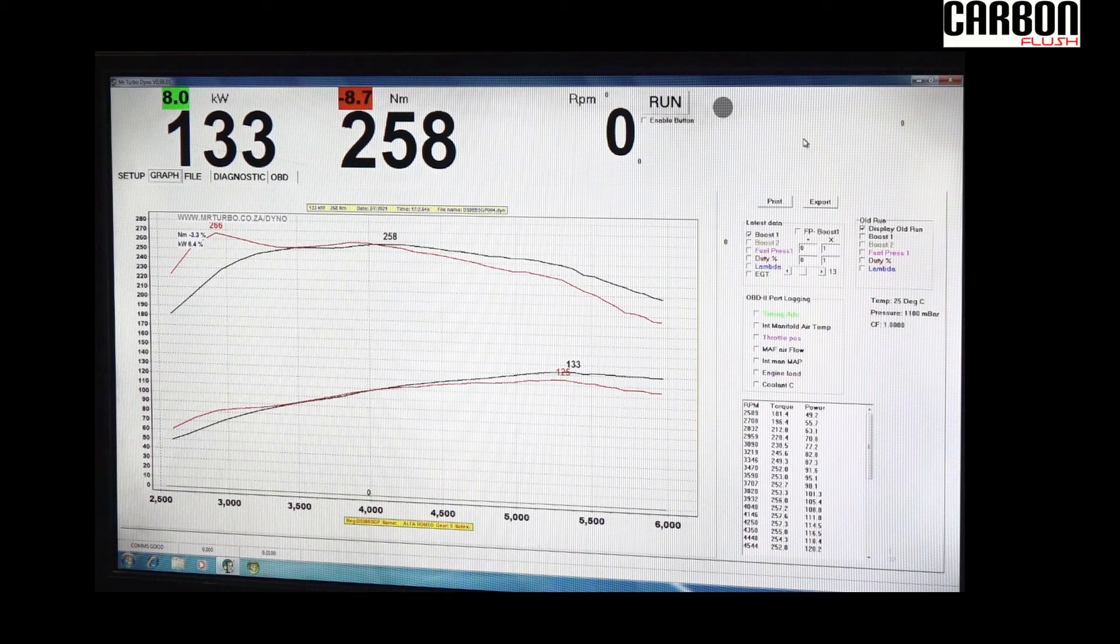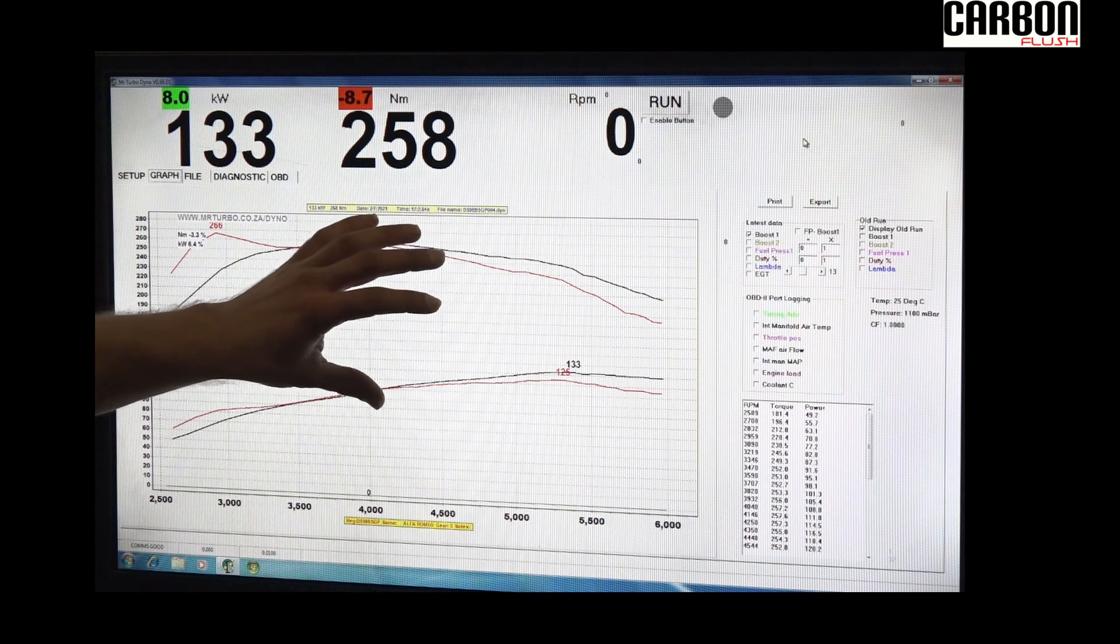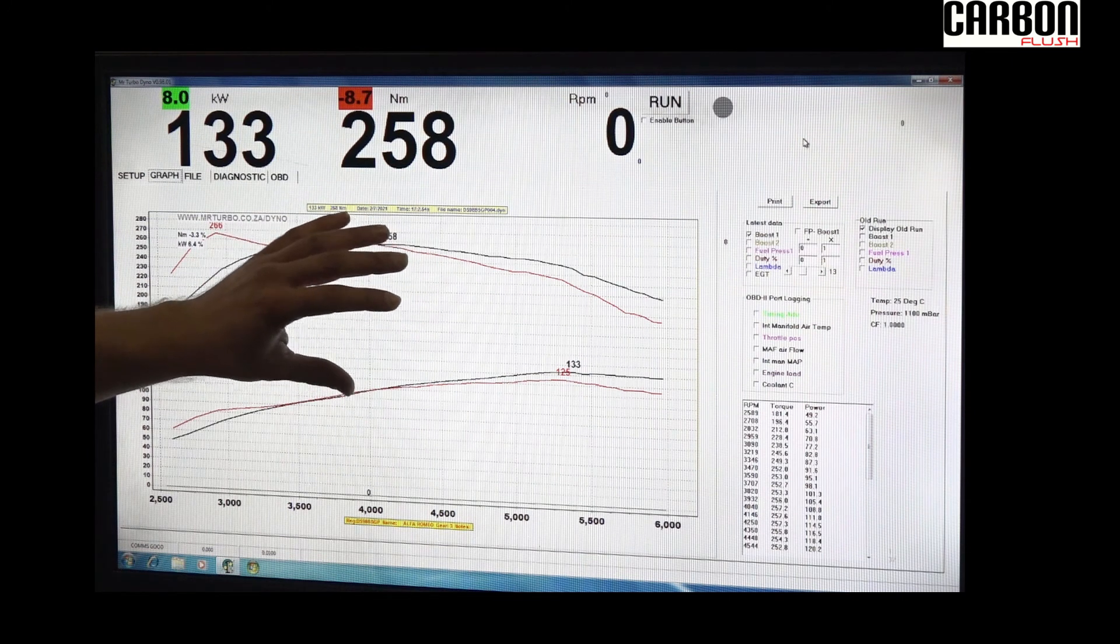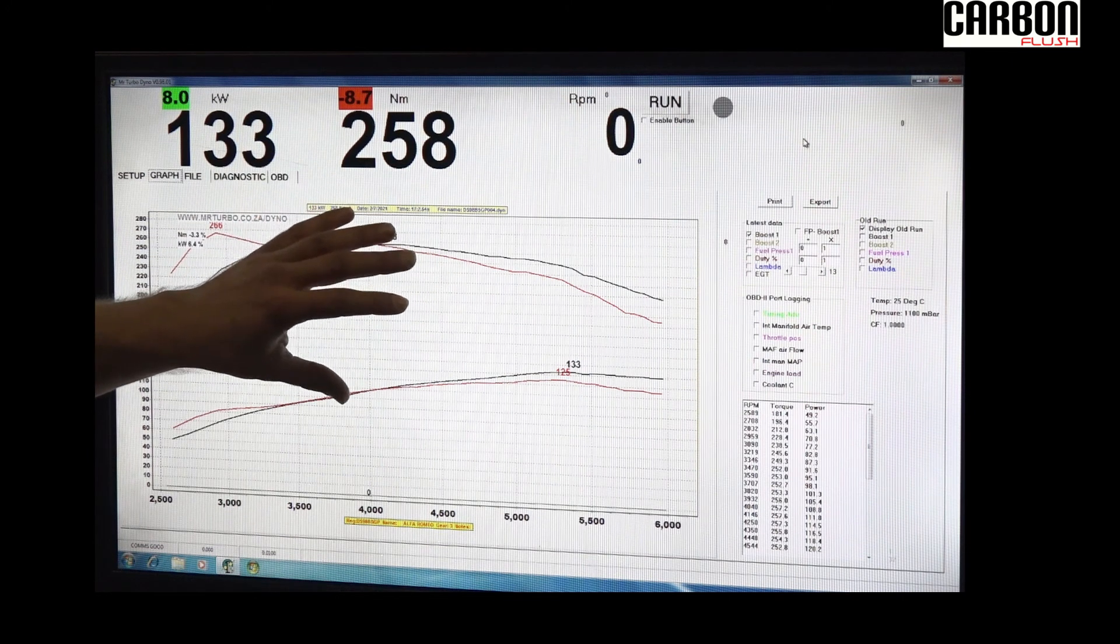The car in question does have a downpipe and exhaust. So the gains here could not be related to a blocked cat or anything like that. It's mainly internal to the motor.